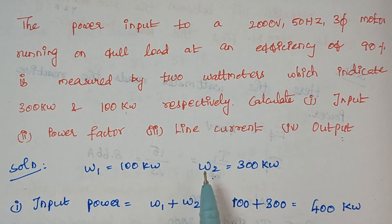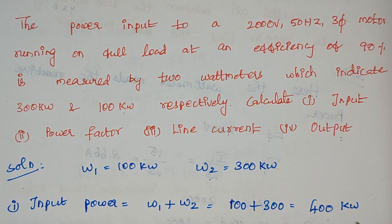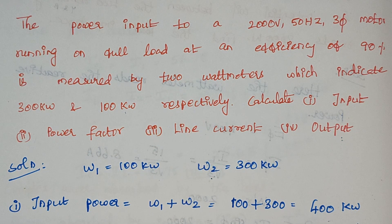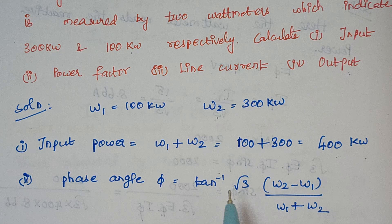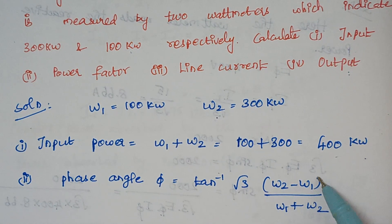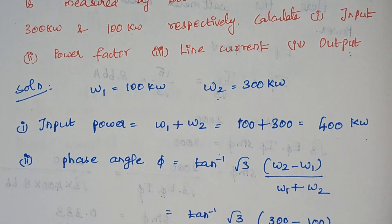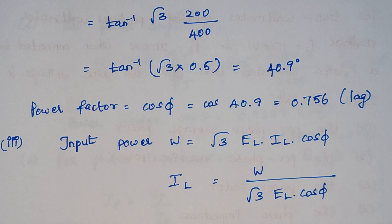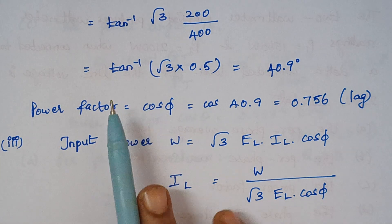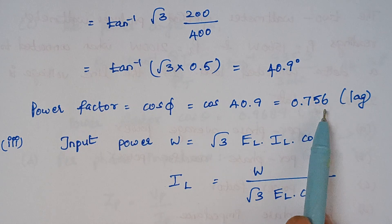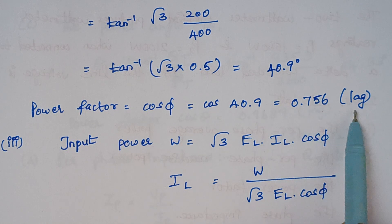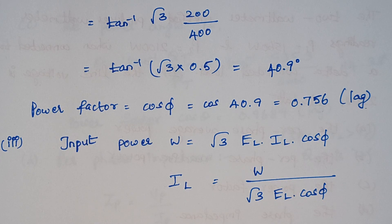Input power = W1 + W2 = 100 + 300 = 400 kW. To find power factor, we first find the phase angle. The formula is φ = tan⁻¹[√3 · (W2 − W1) / (W1 + W2)]. Substituting the values gives φ = 40.9 degrees. Power factor = cos φ = cos 40.9° = 0.756 lagging. It is lagging because most motors used are induction motors, which are inductive loads.